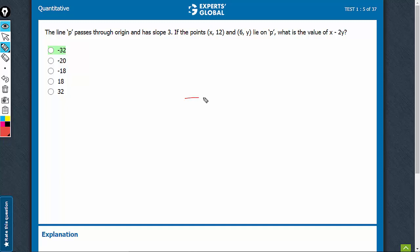The line passes through the origin and has slope 3, so it is rising at a very steep rate, something like this. If the points (x, 12) and (6, y) lie on P, what is the value of x minus 2y?